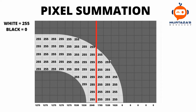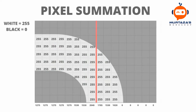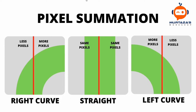There is also an issue with this method. Let's look at the issue first and then we will look at how we can solve it. When we have more pixels on the right hand side we will say the curve is on the right. When we have the same number of pixels on the left and the right we are going to say that we are going straight. And when we have more pixels on the left hand side we are going to say that our curve is on the left.